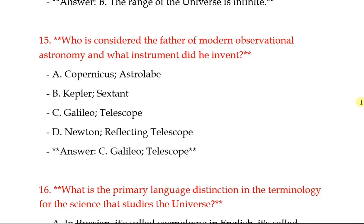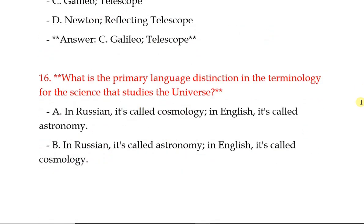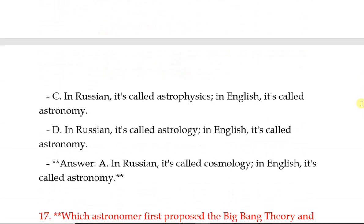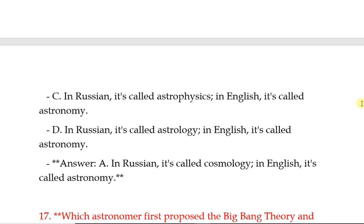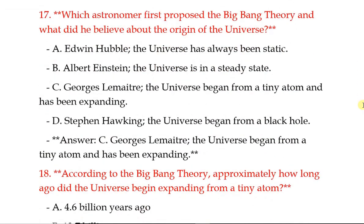Who is considered the father of modern observational astronomy and what instrument did he invent? Galileo is the father of modern observational astronomy. He invented the telescope. What is the primary distinction in the terminology for the science that studies the universe? In Russia it's called cosmology; in English it's called astronomy. Which astronomer first proposed the Big Bang theory, and what did he believe about the origin of the universe? The universe began from a tiny atom and has been expanding.